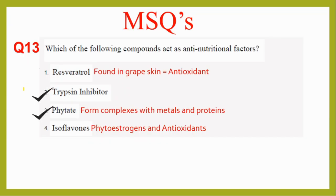We are done with MCQs and will now start with MSQs — multiple select questions. The rules: you must select only the right answers. If you miss even one correct answer, the question is wrong. If you tick all correct answers plus one wrong answer, it is null and void. If you tick only one correct answer when there are more, also null and void — no partial marking. However, since there is no negative marking in MSQs, everyone should attempt these questions.